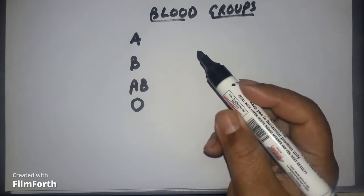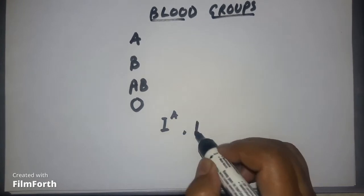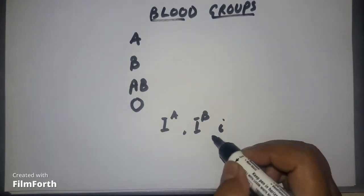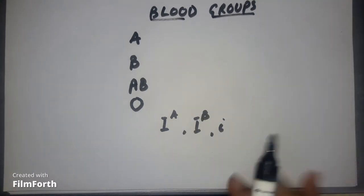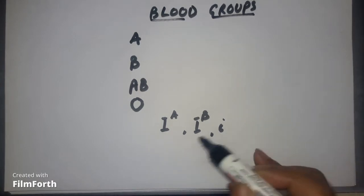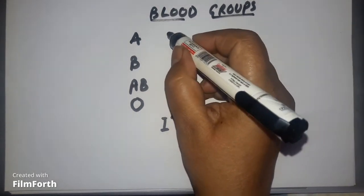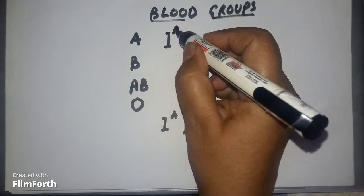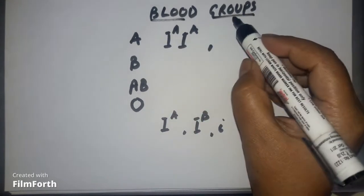These four types of blood groups are controlled by three alleles. For every character there is a pair of genes, and in human beings for blood groups there will be a pair only. But in the whole population, three types of genes or alleles control this character. In one individual there will be only two — for example, A blood group will have a specific type of allelic combination.